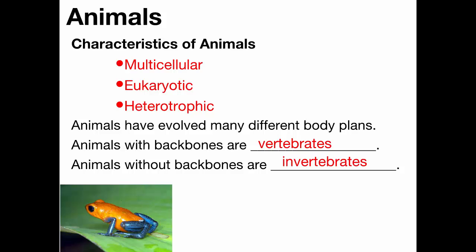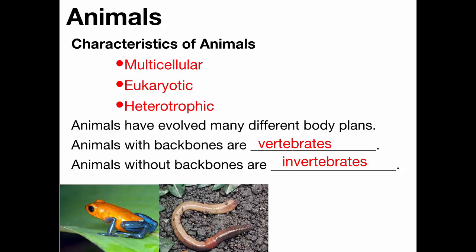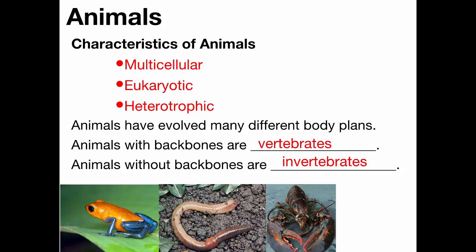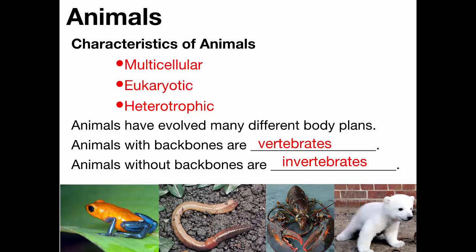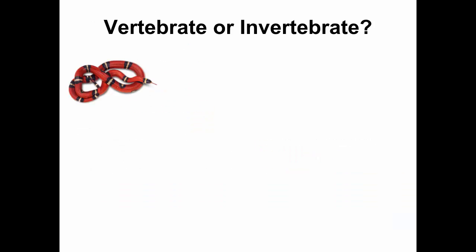Students are asked to classify animals as vertebrate or invertebrate. A snake is a vertebrate — they do have a backbone. In fact, almost their whole body is vertebrae, which are individual small bones stacked one after the other. A crab is an invertebrate; they don't have a backbone but do have a skeleton called an exoskeleton.